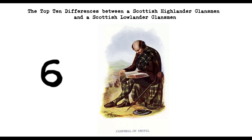6. Religion. Highlanders tended to be Catholic or Episcopalian, while Lowlanders were mostly Presbyterian. The Church of Scotland had a much stronger presence in the Lowlands.